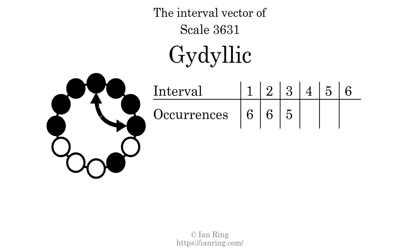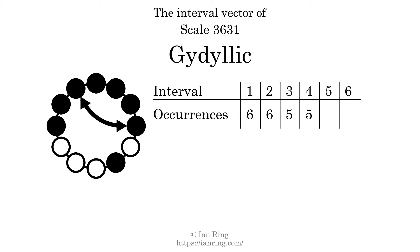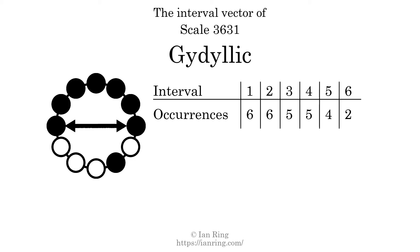There are 5 intervals with the size of 4 semitones, 4 intervals with the size of 5 semitones, and 2 intervals with a size of 6 semitones. Each interval does not appear in this scale a unique number of times, so this is not a deep scale.